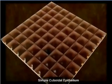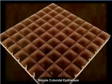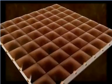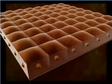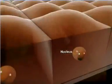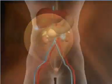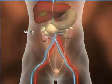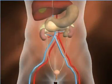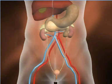The cells of the simple cuboidal epithelium are cuboidal or square-shaped with centrally located spherical nucleus. This epithelium is found in the lining of the kidney tubules and in the ductile glands. The epithelium has a significant role in the process of absorption and secretion.